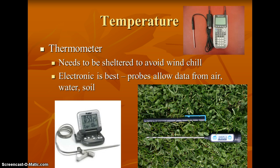To measure temperature, we use a thermometer. When measuring temperature, some ways to control this measurement are sheltering your thermometer to make sure that wind chill is not a factor. It's always a good idea to use an electronic probe — they make it easier to find the temperature of air, water, and soil. You just insert the probe and you get a digital readout of your temperature.